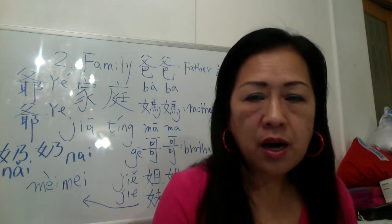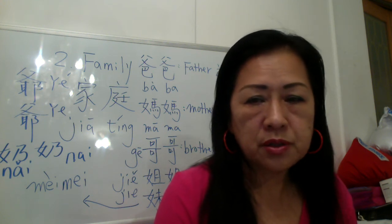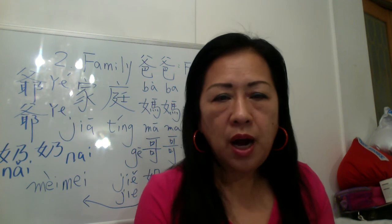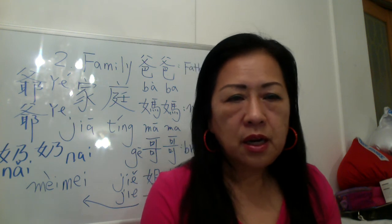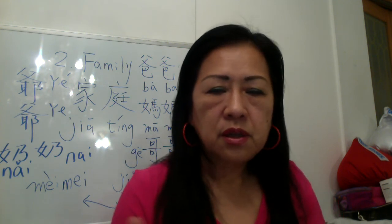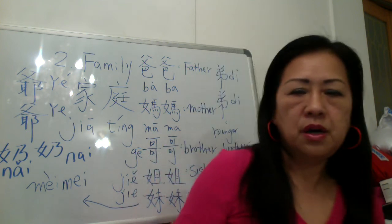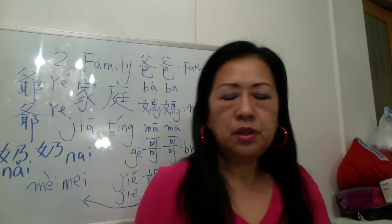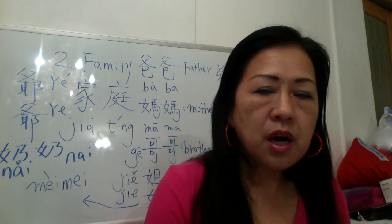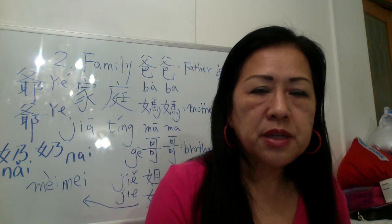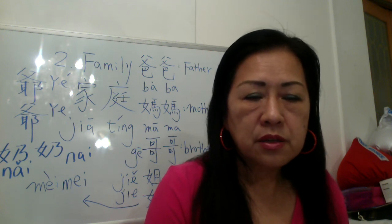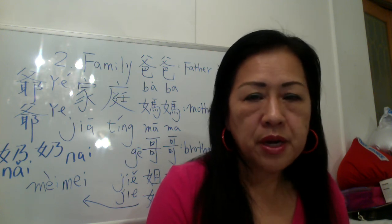甚至于一朵花 (flower) — 我觉得是蛮重要的. 还有长长的东西我们叫一条，like 一条棍子. So memorize those 10 measure words for the final.